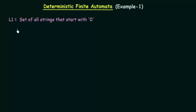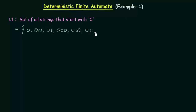Before starting, let's see what the elements in this set look like. Since this is a set of all strings that start with 0, the elements would be like 0, 00, 01, 001, 010, 0000, and so on. This is actually an infinite set because any string that starts with 0 is present in L1.